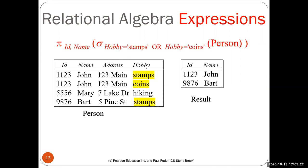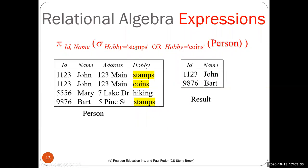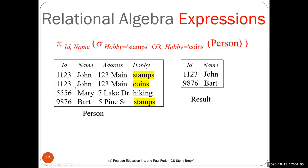You can combine relational algebra operators. For instance, applying SELECT where hobby is 'stamps' OR 'coins' gives three tuples, and then projecting that intermediate result on id and name gives only John and Bart — because John appears twice (two matching hobbies) but as a set only one copy is kept. So the final result has two tuples.